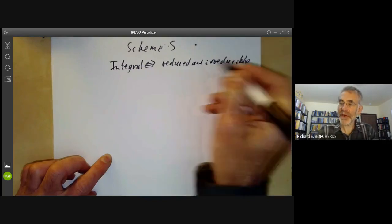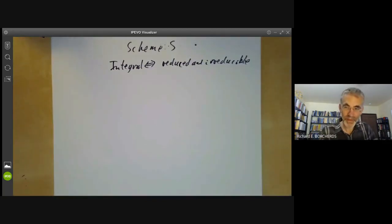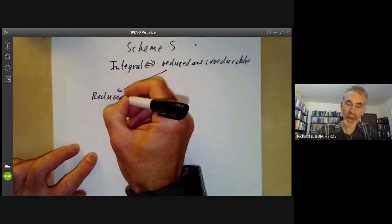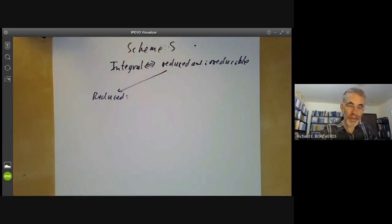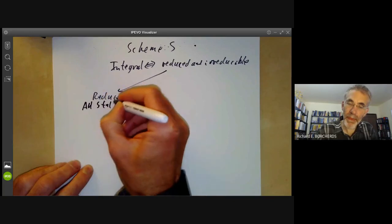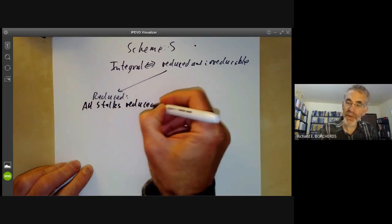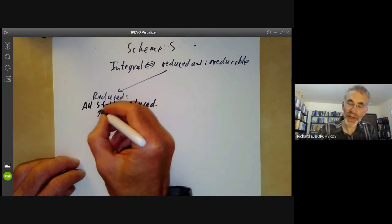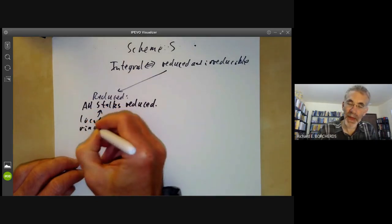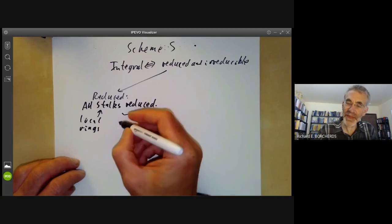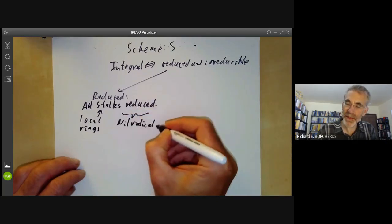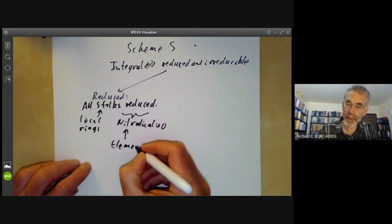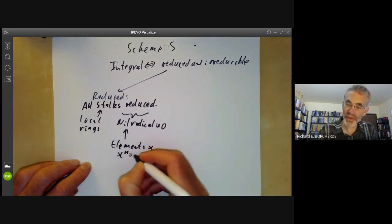What does it mean for a scheme to be reduced and irreducible? A scheme is reduced means that all stalks are reduced. There is a stalk at each point which is a local ring. What does it mean for a ring to be reduced? This means its nil radical is zero — the nil radical being the elements x with x to the n equals zero for some n.